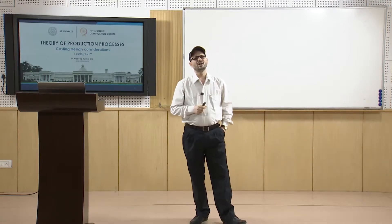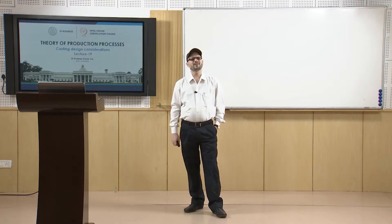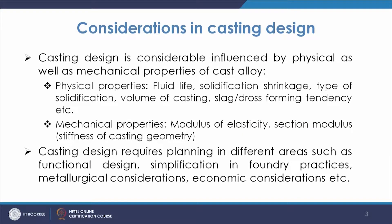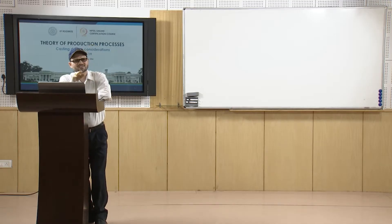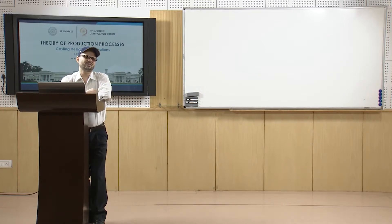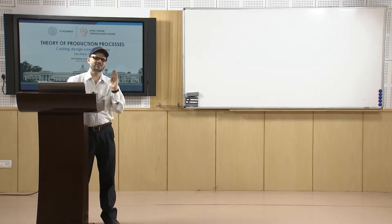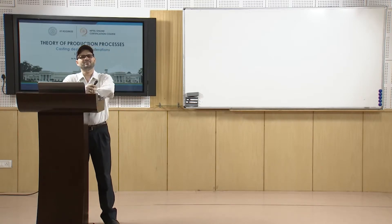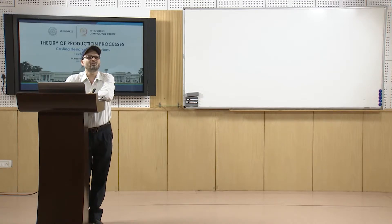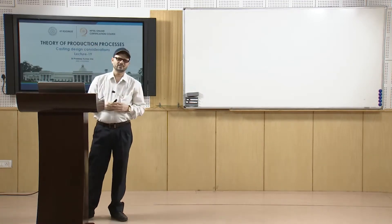Slag or dross forming tendency is another factor. Many materials have slag or dross forming tendency. They react with atmospheric gases or air, and even during the pass through the runner, because of aspiration or gases present, slag or dross may form. You need a proper gating network — a proper network of channels leading towards the cavity — so that slag or dross forming does not hamper the quality of the cast material.